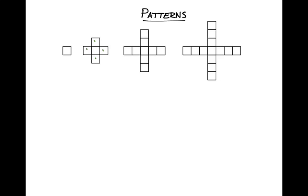The second shape adds a different box onto each side, and then from the second to the third we add four more boxes on the end of each of the edges, and we do the same thing for the fourth one. We're going to look at the boxes — how many boxes are in each one. In our first square we've got one box, then five boxes, then nine boxes, then thirteen boxes.